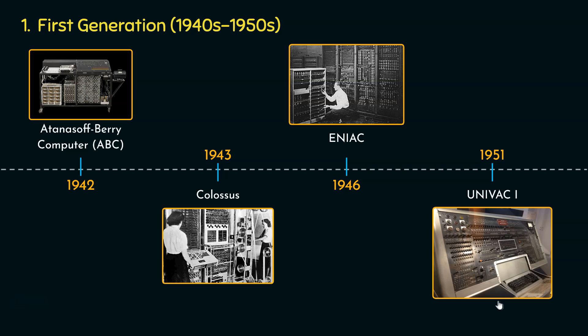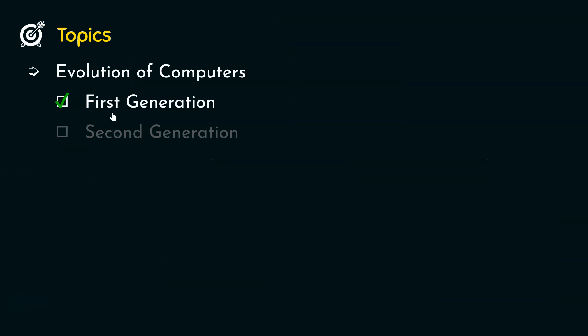So these were the milestones of the first generation of computers which used vacuum tubes. That was all about the first generation of computers. Let's learn about the second generation of computers.